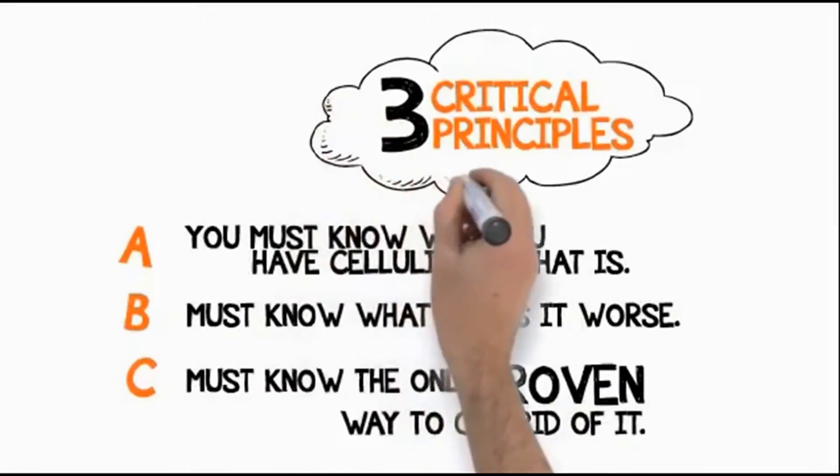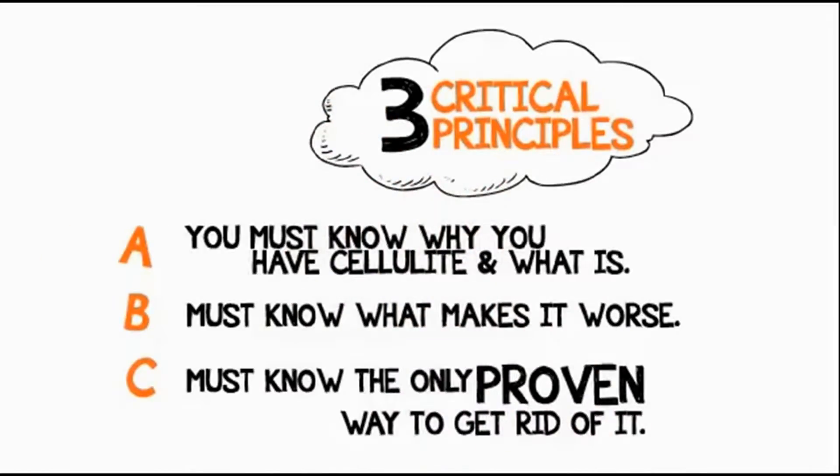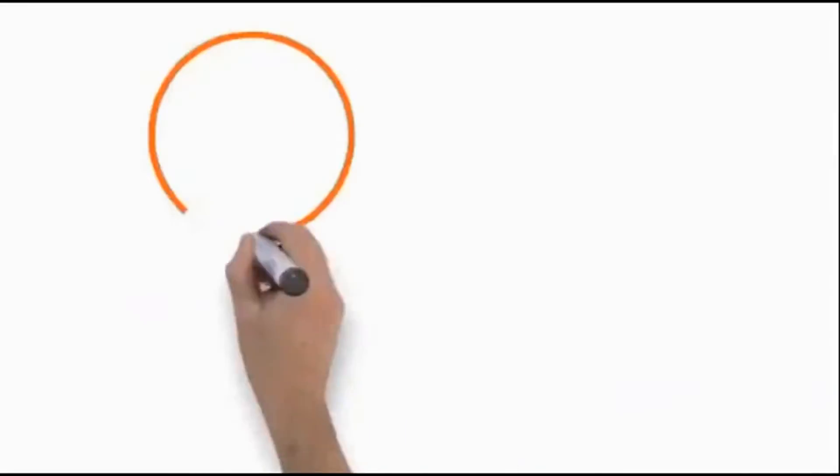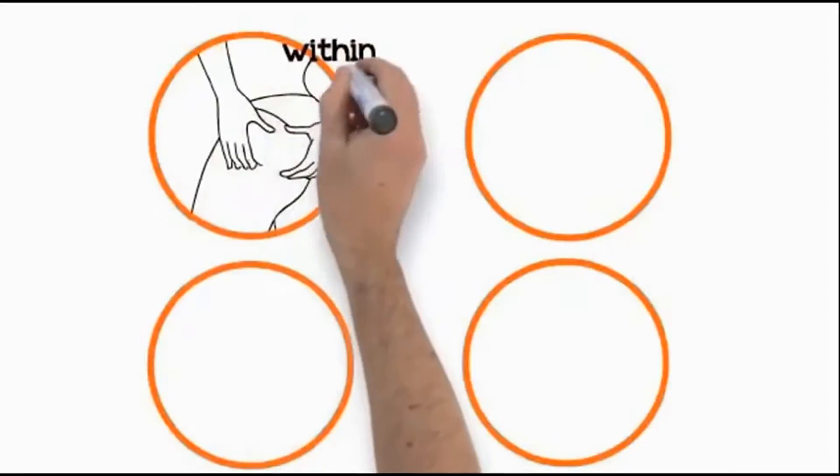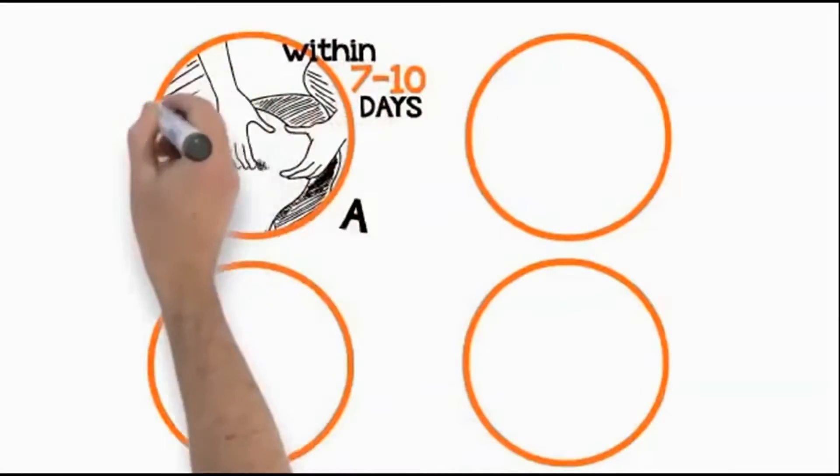These three crucial principles are simple, and I'm going to show you each of them in just a moment. Here's what you can expect once you put this into use. Your skin is getting tighter within seven to ten days, and the dimples and bumps are starting to fade.